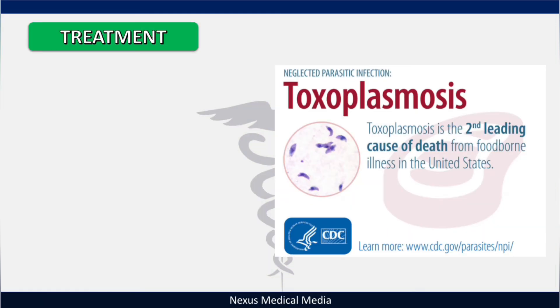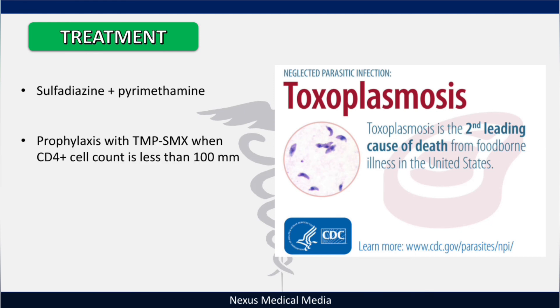For treatment of toxoplasmosis, you use the combination of sulfadiazine and pyrimethamine. For prophylaxis, trimethoprim-sulfamethoxazole is used when the CD4 count is less than 100 cells per cubic millimeter. This is high-yield for exams. A more detailed comprehensive lecture on toxoplasmosis will be made — that's all for now.